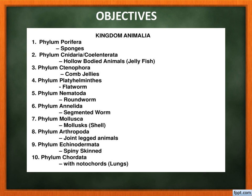The ten phyla are arranged in ascending order as per character, meaning each phylum is a little more advanced than the previous one. For example, Porifera has very simple body organization, Coelenterata is a little more advanced than Porifera, Ctenophora is a little more advanced than Coelenterata, and Platyhelminthes is a little more advanced than Ctenophora. We must learn them in order.